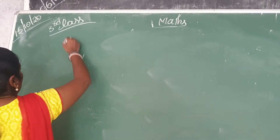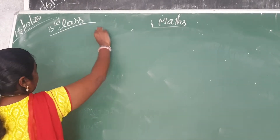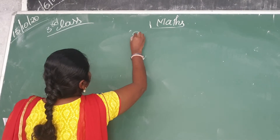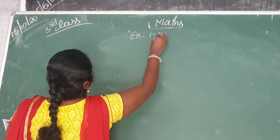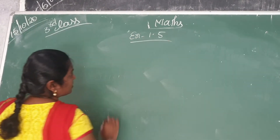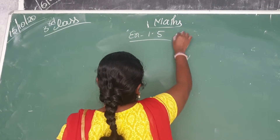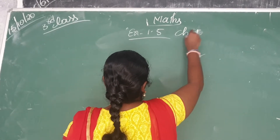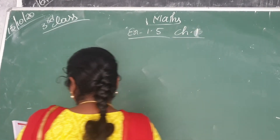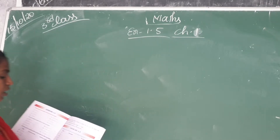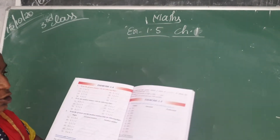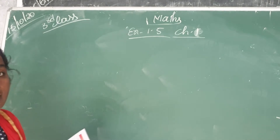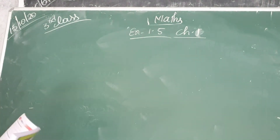Good morning children. Now, Class 3 Maths, Exercise 1.5, Chapter 1. Today's class is Exercise 1.5. The topic is about successors and predecessors.